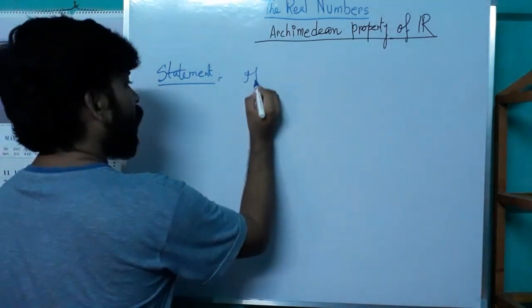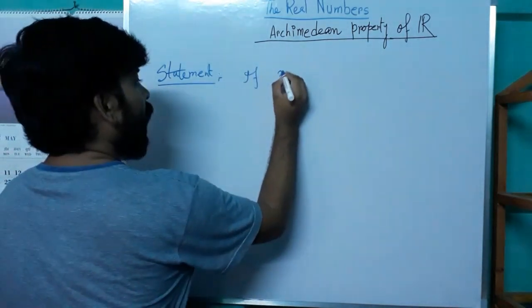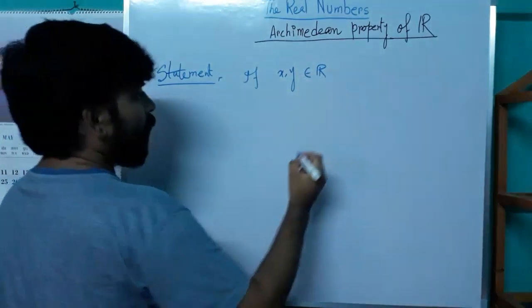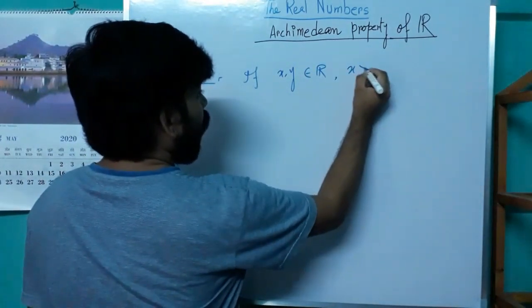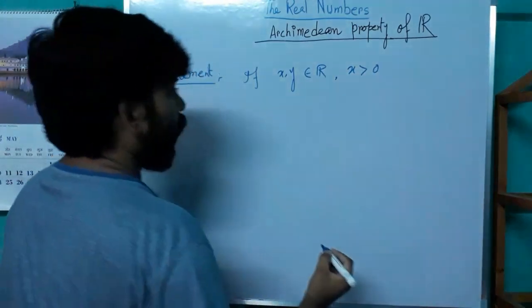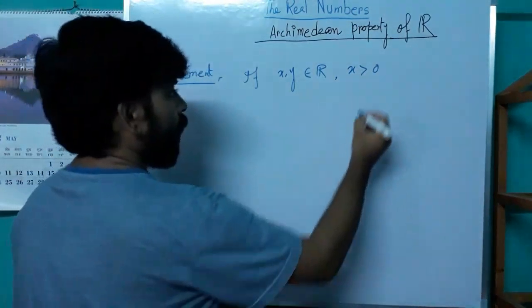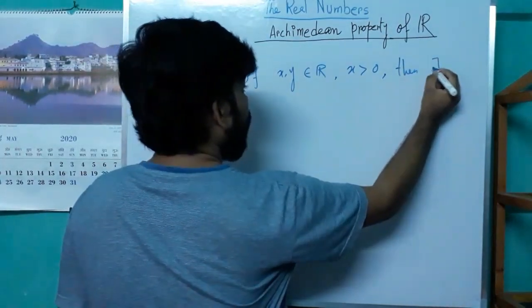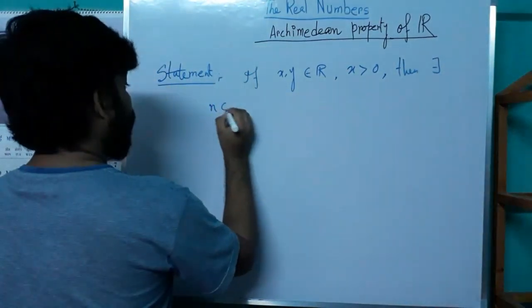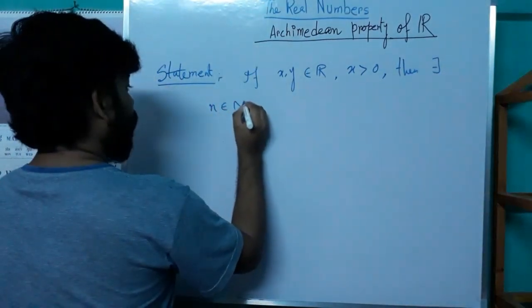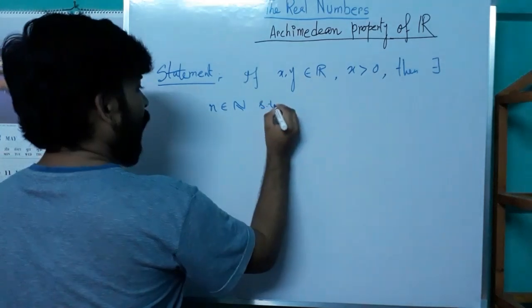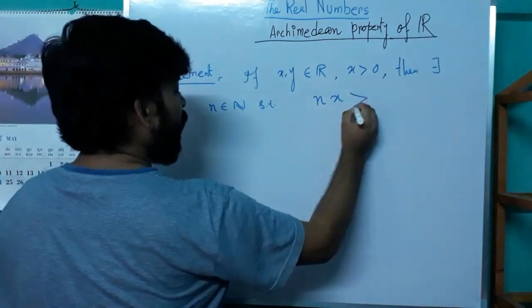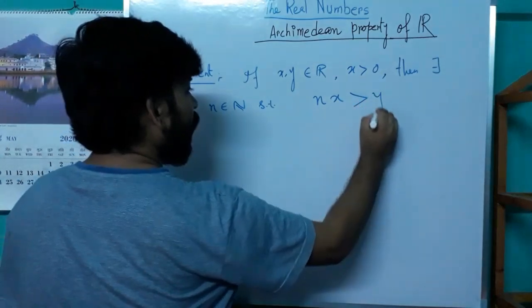If x and y are two real numbers such that x is positive, then there exists a natural number n such that n·x is strictly bigger than y.